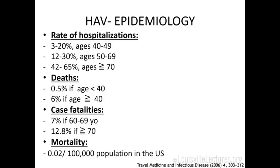This is the gloom and doom slide showing hospitalizations, deaths, case fatalities, and mortality. Pay particular attention to age — as you get older, your rate of hospitalizations and death increases dramatically. When you're over 70, hospitalization rates go up to 42 to 65%. For deaths, if you're less than 40, there's about a 0.5% risk, which jumps significantly in older age groups — case fatality is about 7% in one age group and nearly 13% if you're older than 70.